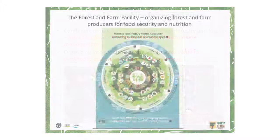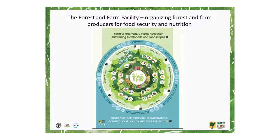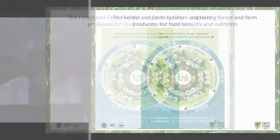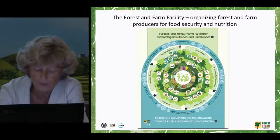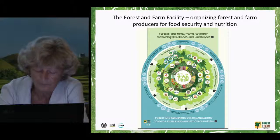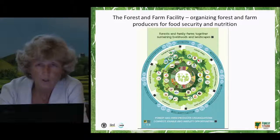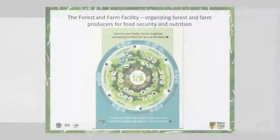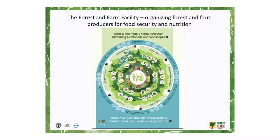The Forest and Farm Facility is a multi-donor funded partnership of FAO, IUCN, and the International Institute for Environment and Development — the IIED. It is putting this landscape approach into practice by supporting small-scale forest and farm producer organizations and promoting intersectoral platforms, with the ultimate aim of improving livelihoods, food security, and nutrition. If you wish to have more information on the Forest and Farm Facility, you will find lots of it on the table outside, and you can also speak to our colleagues Jeff Campbell, Sophie, and Johnny.